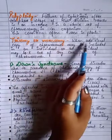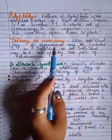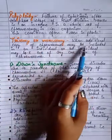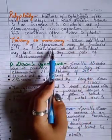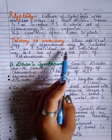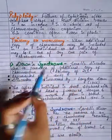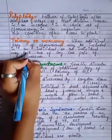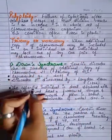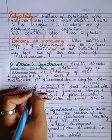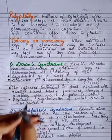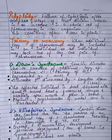Trisomy refers to an additional copy of a chromosome being included in an individual, while monosomy means an individual lacks one of any pair of chromosomes.